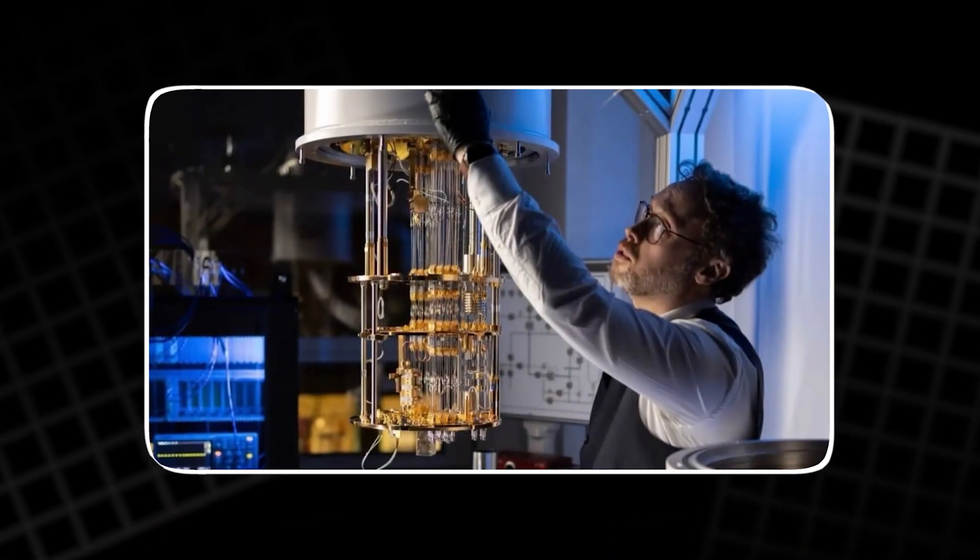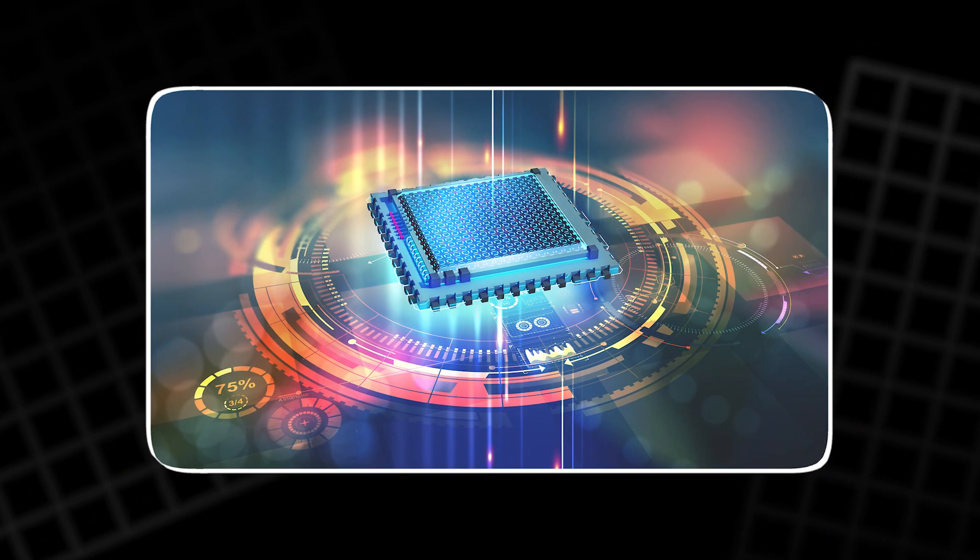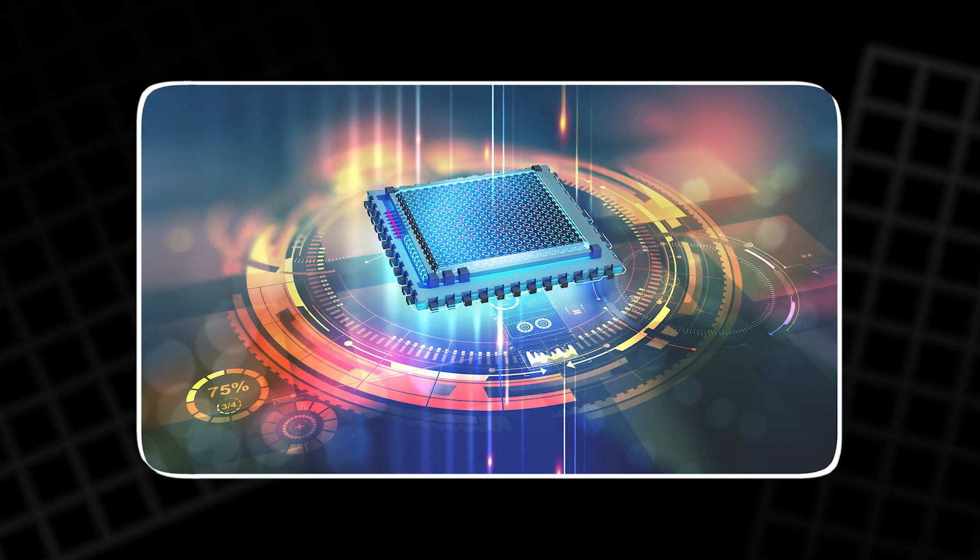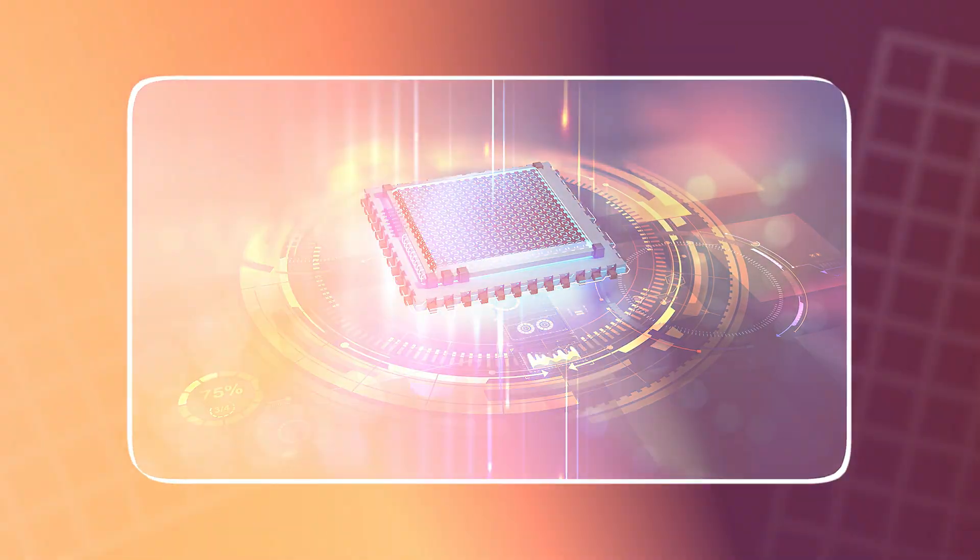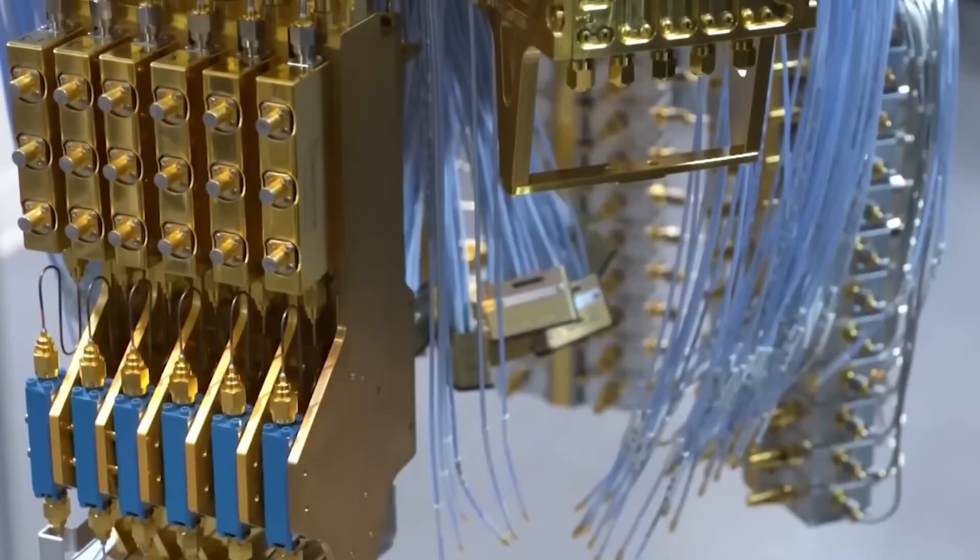These experiments are happening at the same time as three major patterns in quantum technology. The first pattern is the discovery of exact scaling laws for quantum computing. For years, engineers struggled through trial and error. Sometimes machines improved, sometimes they did not.